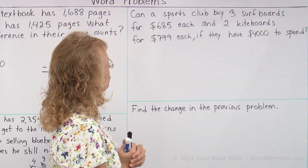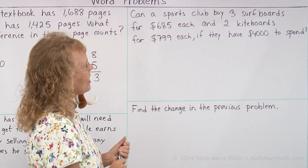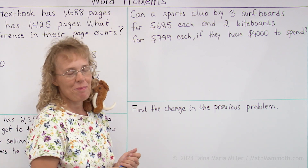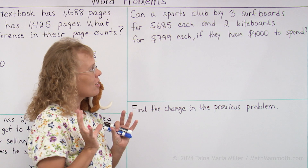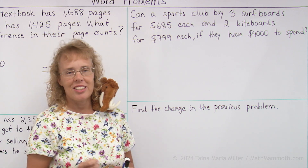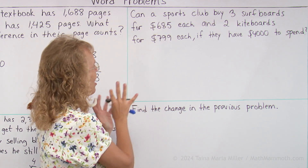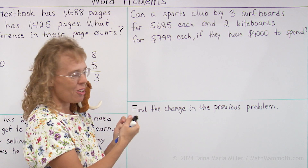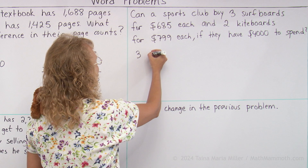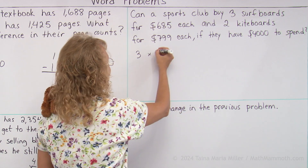Can a sports club buy 3 surfboards for $685 each and 2 kiteboards for $799 each, if they have $4000 to spend? They have $4000 and they want to buy all this stuff — can they do it? This is a great example where we can use estimation to answer the problem. We don't actually need to add all those difficult numbers to find the total cost. We can estimate.